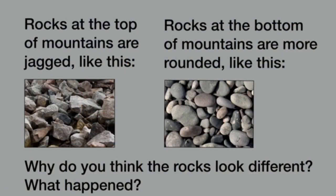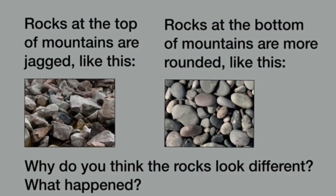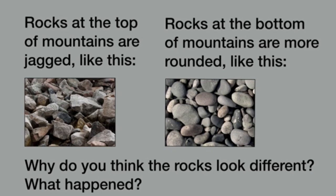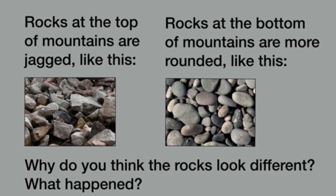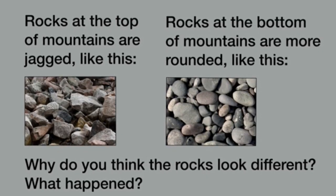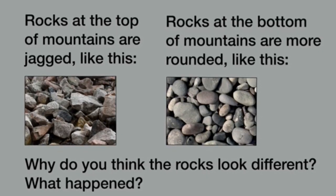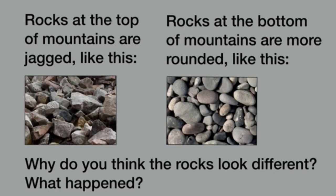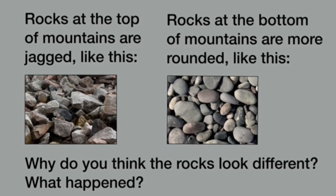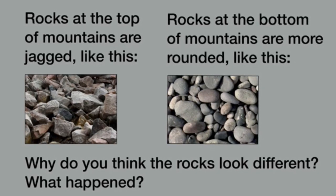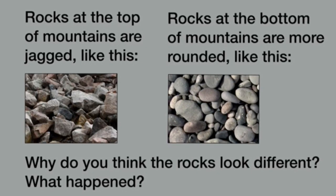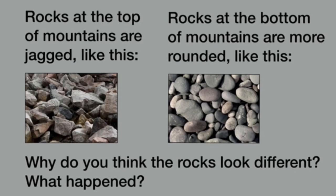Rocks at the top of mountains are jagged, like this picture here shows on the left. However, rocks at the bottom of the mountain are more rounded and smooth, like this picture on the right. So why do you think the rocks look different? What happened?